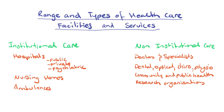Non-institutionalised care includes doctors and specialists, dental, optical, chiro, physical, community and public health, and research organisations. The concept of institutionalised means that facilities and services are all within big institutions such as a hospital or nursing home, with ambulances being a product of that hospital institution.